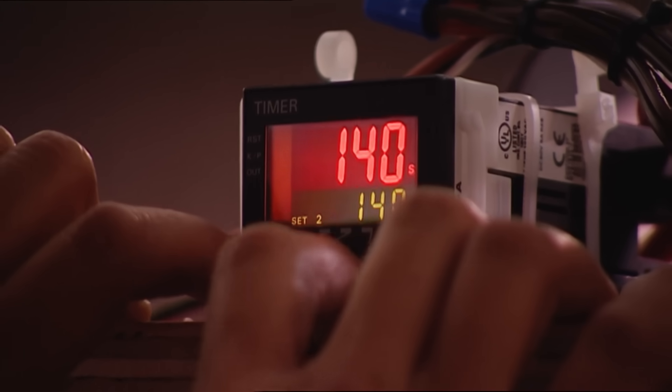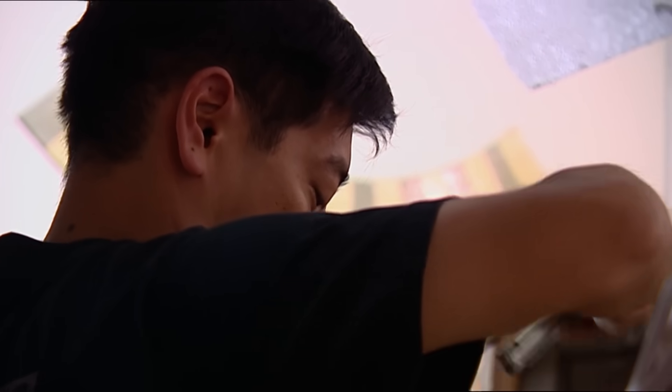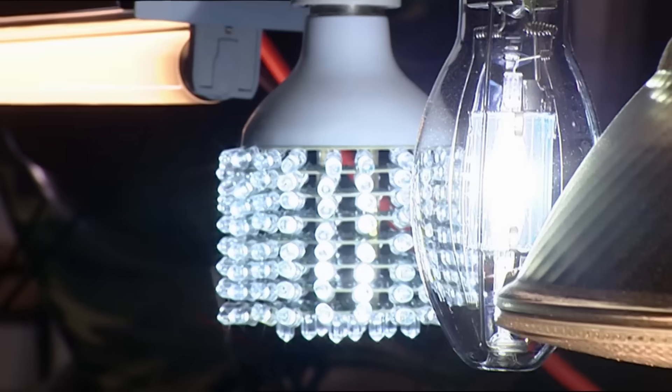So why don't we just put this on a two-minute cycle? So that's the plan. Grant's rigged the lights up to a timer, and they're going to turn them on and off every two minutes to see how long before the bulbs break.